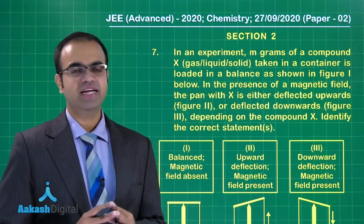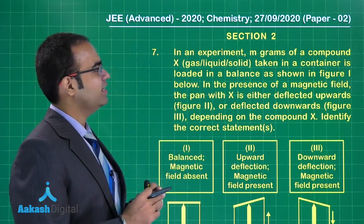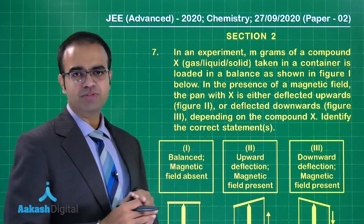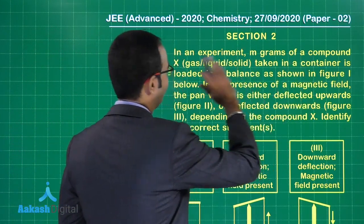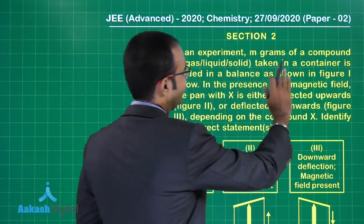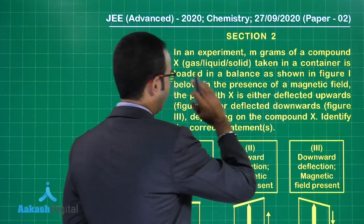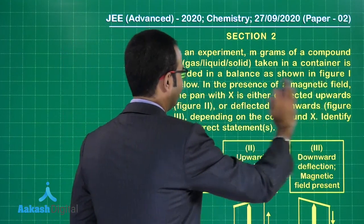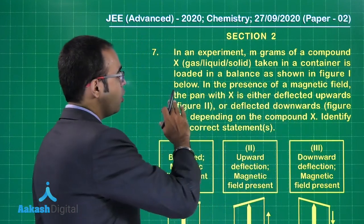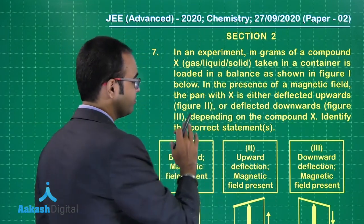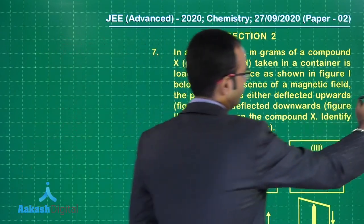Let us solve the seventh question of paper two. This is a question from section two, so we need to take care that there are more than one option correct. In an experiment, m grams of compound X taken in a container is loaded in a balance as shown in figure one below. In the presence of a magnetic field, the pan with X is either deflected upwards or downwards depending on the compound X. Identify the correct statements.